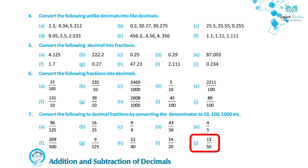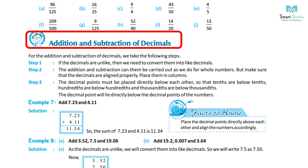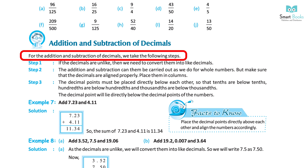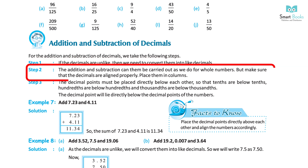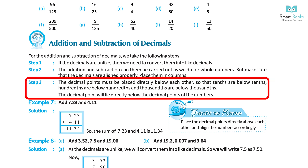Addition and Subtraction of Decimals: We take the following steps. Step 1: If the decimals are unlike, convert them into like decimals. Step 2: Addition and subtraction can then be carried out as for whole numbers, but ensure the decimals are aligned properly in columns. Step 3: The decimal points must be placed directly below each other, so tenths are below tenths, hundredths below hundredths, and thousandths below thousandths.